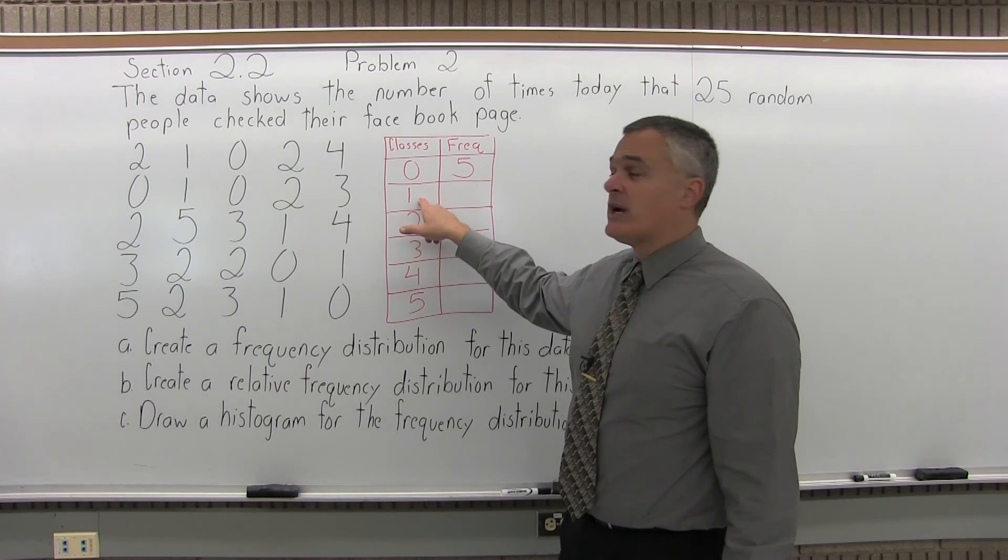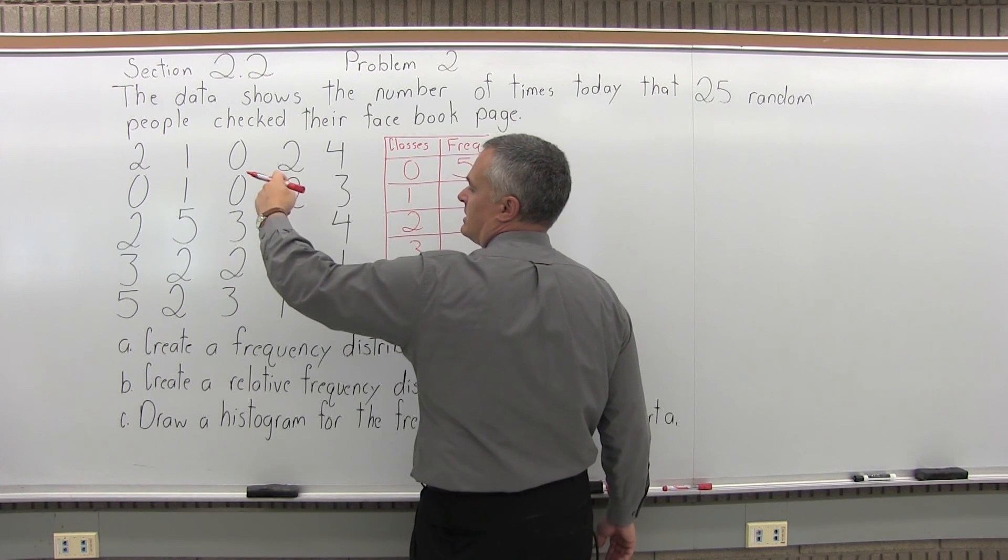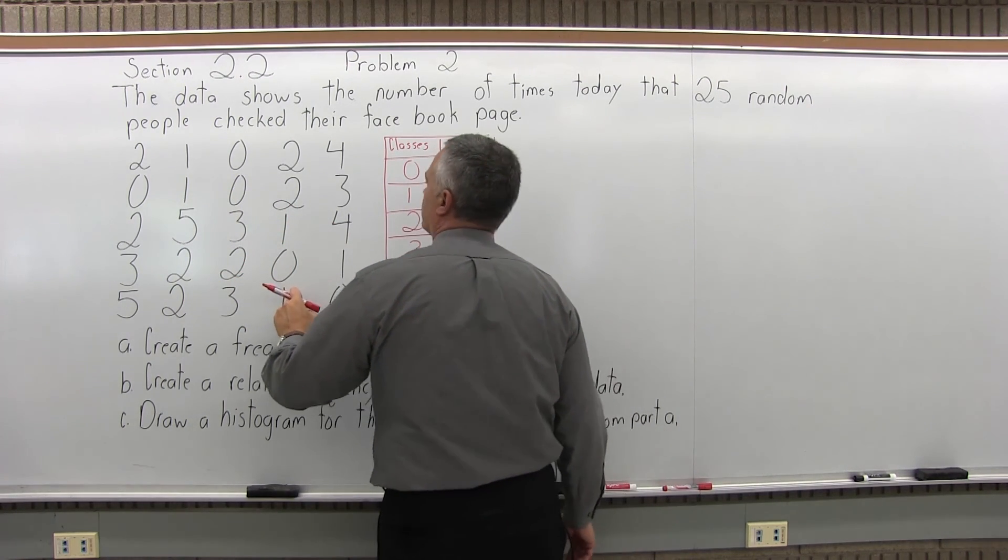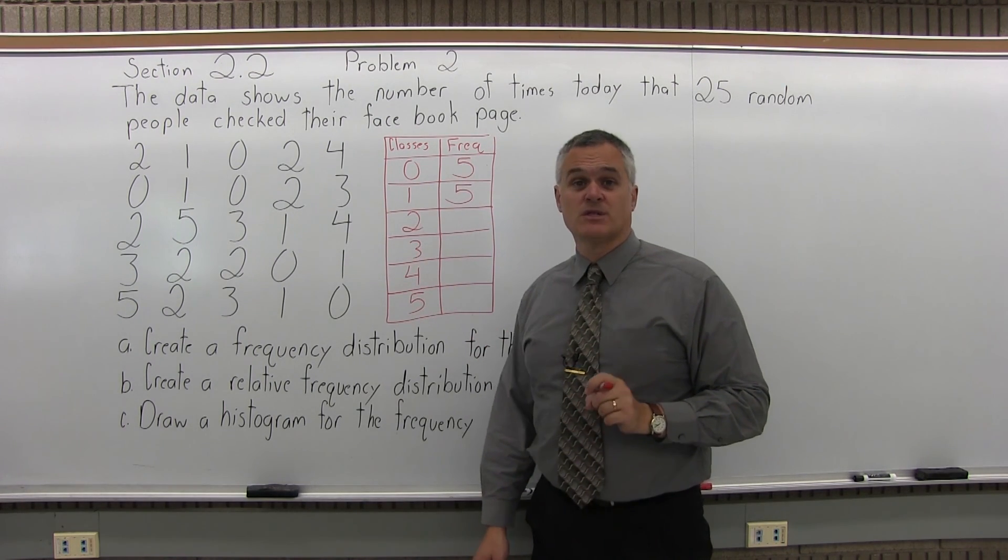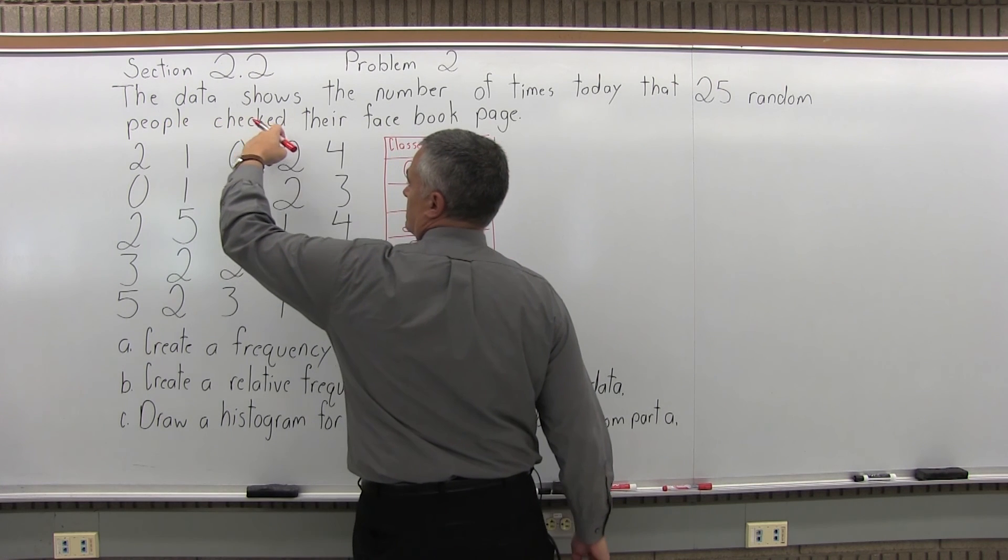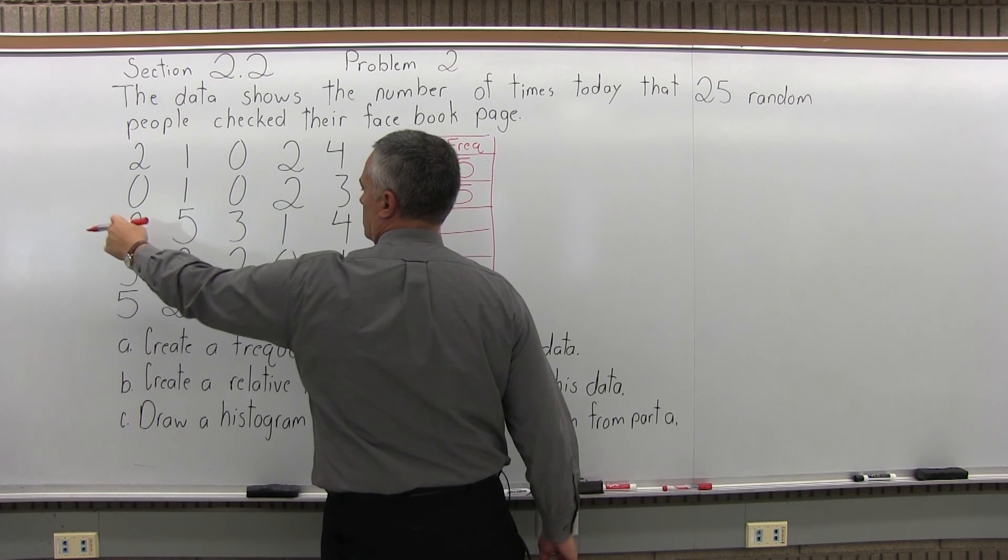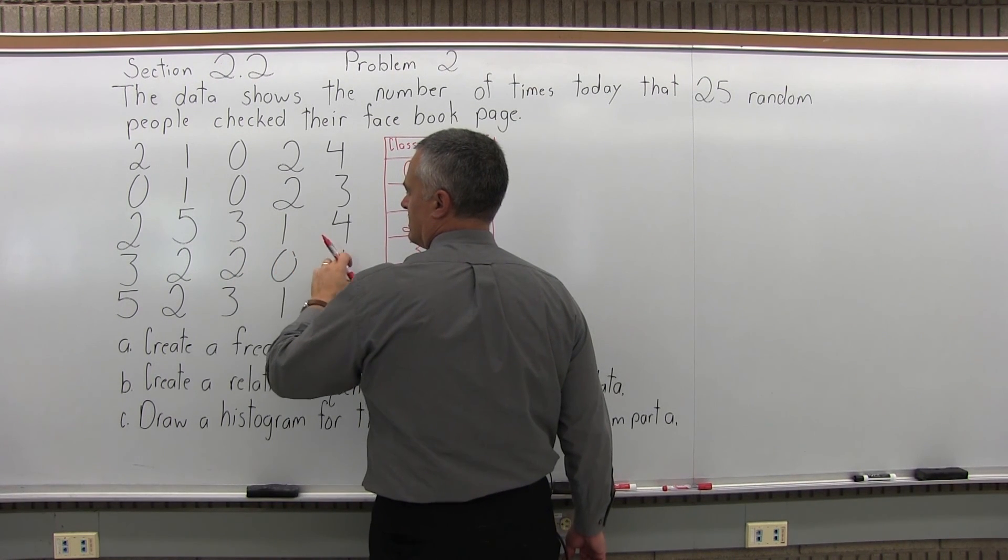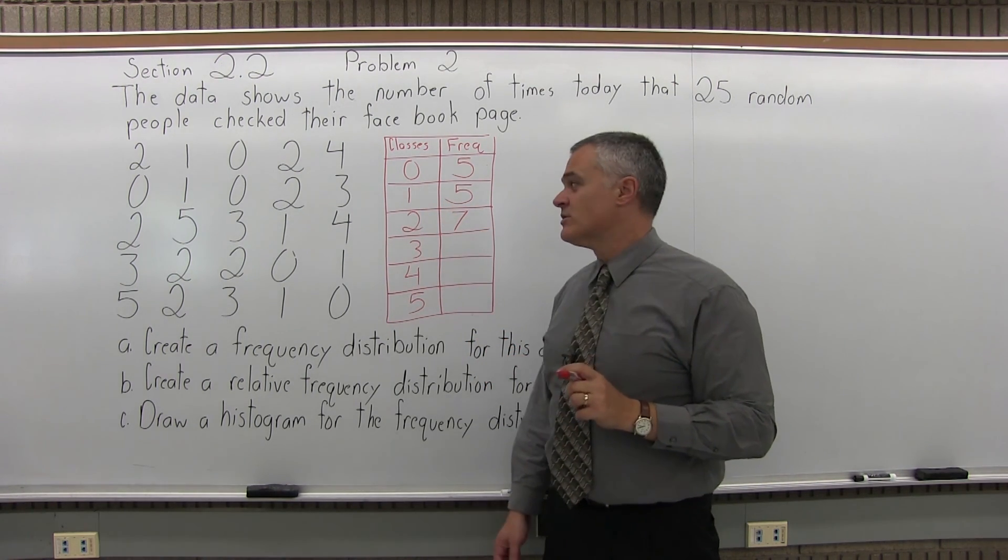So next class is 1. How many people checked their Facebook page once during the day? 1, 2, 3, 4, 5. There are also 5 people who checked their Facebook page once in the day. How many people checked it twice? 1, 2, 3, 4, 5, 6, 7. 7 people checked twice during the day.